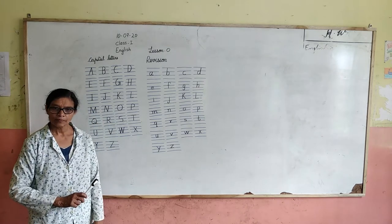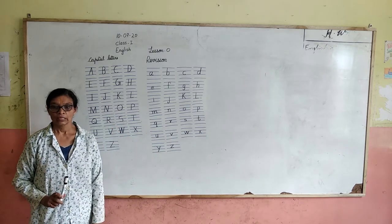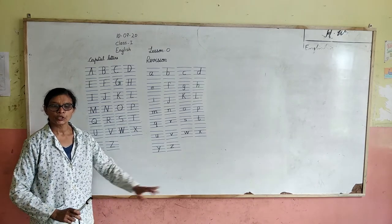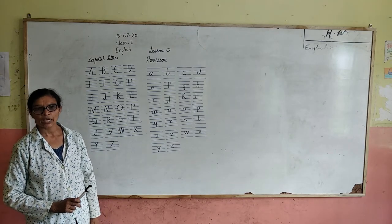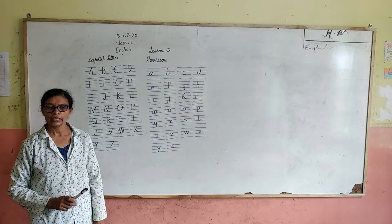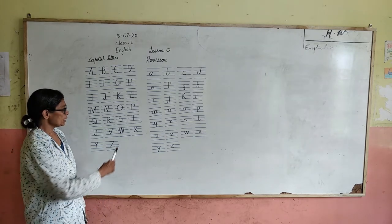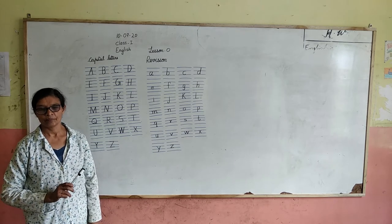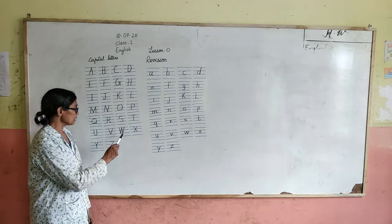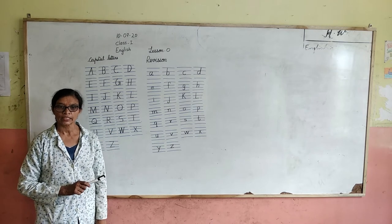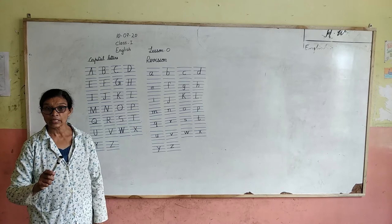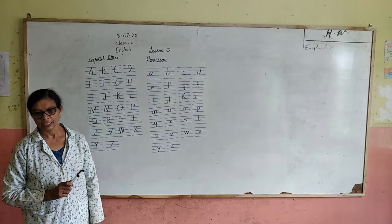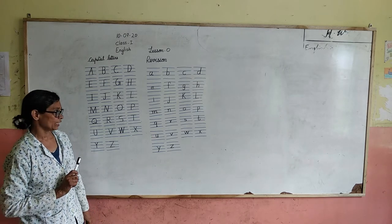Understand? A to Z — capital letters and the small letters. You have to write in your notebook and read ten times. Let these words cover A to Z. You have to write in your notebook and read ten times, then write it. Okay?